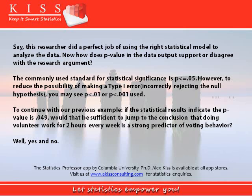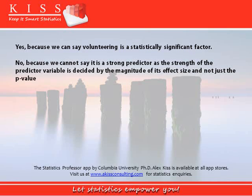How does the p-value in the data output support or disagree with the research argument? The commonly used standard for statistical significance is less than 0.05. However, to reduce the chance of type 1 error — which is incorrectly rejecting the null hypothesis — you may see p less than 0.01 or even a stronger 0.001 being used. If the statistical results indicate that the p-value is 0.049, would that be sufficient to conclude that doing volunteer work for two hours every week is a strong predictor of voting behavior? The answer is both yes and no. Yes, because we can say volunteering is a statistically significant factor; but no, because we cannot say it is a strong predictor, since the strength of the predictor variable is decided by the magnitude of its effect size, not just the p-value.